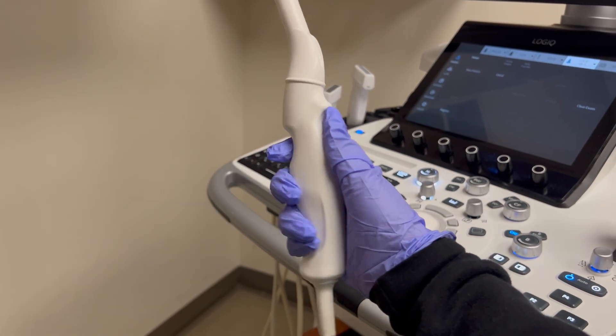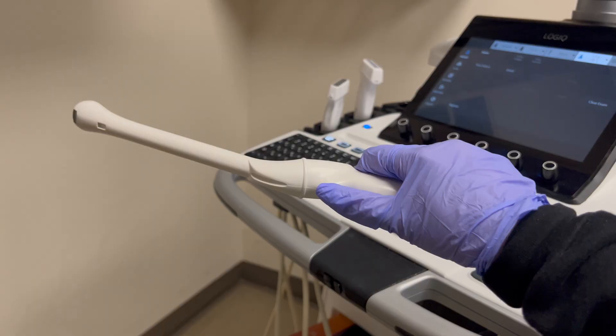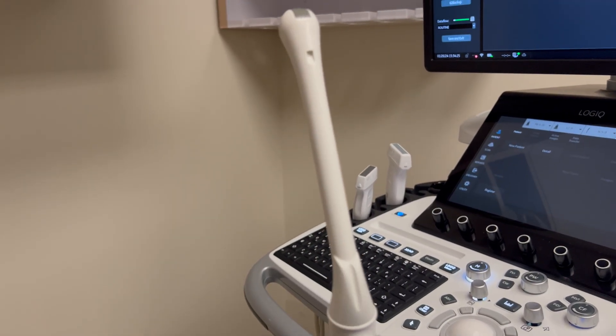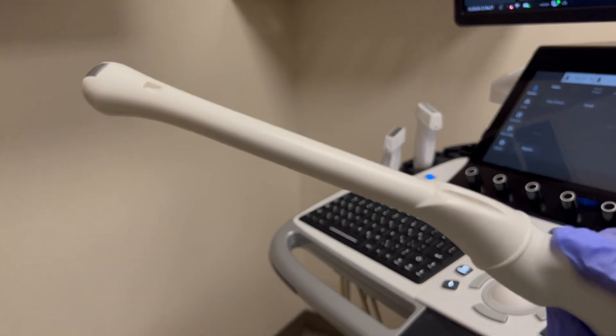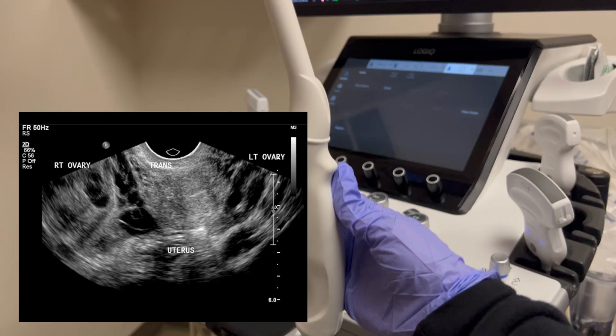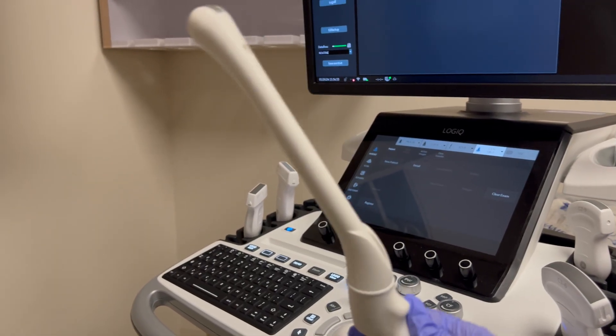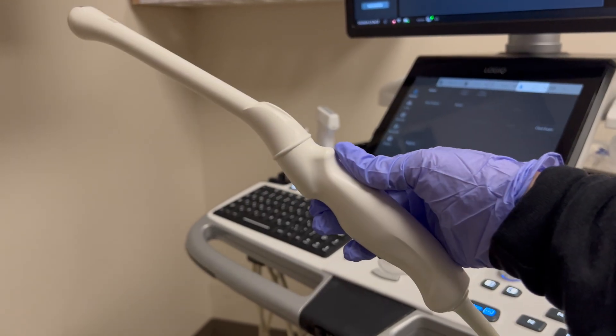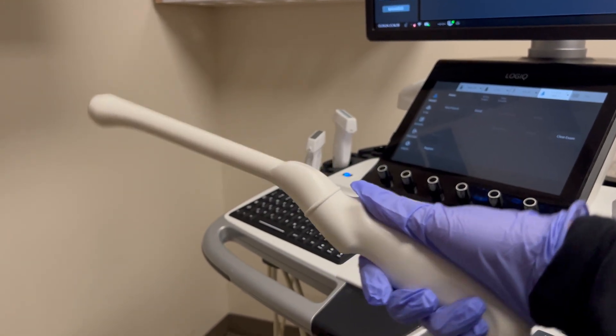We typically can image things much nicer with this probe because it is very close to the organs and assists with patients who are gassy and unable to see clearly transabdominally or on the belly. The notch for this probe will be pointed upwards or supine for sagittal and to the patient's right for transverse. Not everything is in a true sagittal or transverse plane because everyone's organs are angled differently.